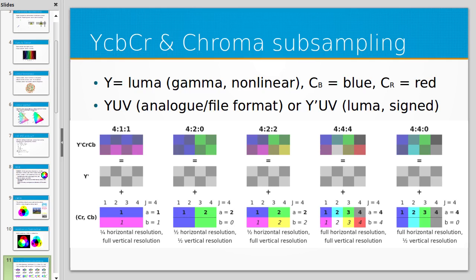YCBCR has three channels, but there are different ways to combine them in a process called chroma subsampling, as represented in the diagram. You might also see YUV, which can refer to analogue information as opposed to digital — such as from an analogue video recording system — or it can refer to a file format related to JPEG. Y'UV is sometimes used to make clear we're talking about luma and not luminance. Luma is basically a digital gamma-corrected signal for luminance.